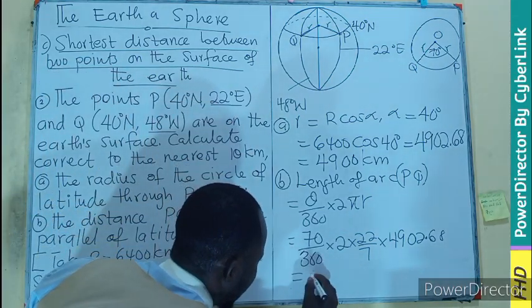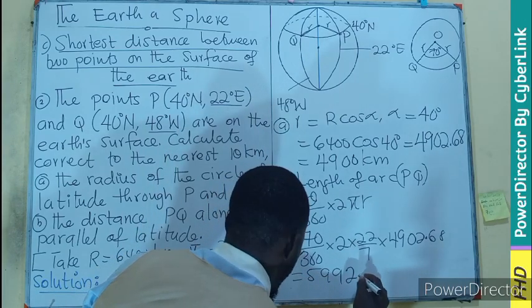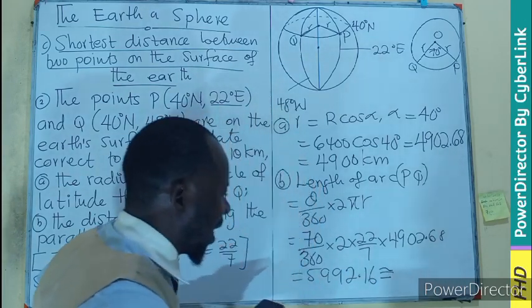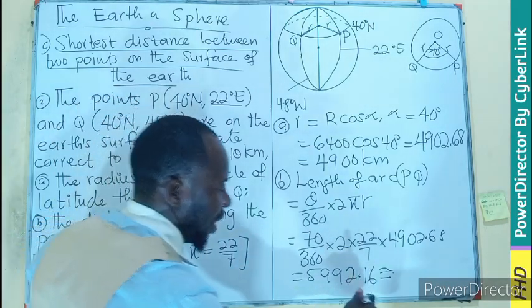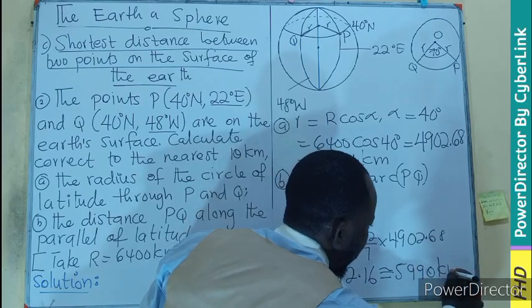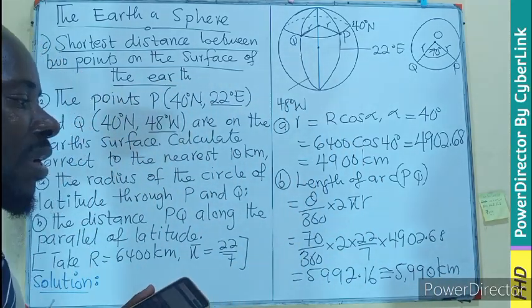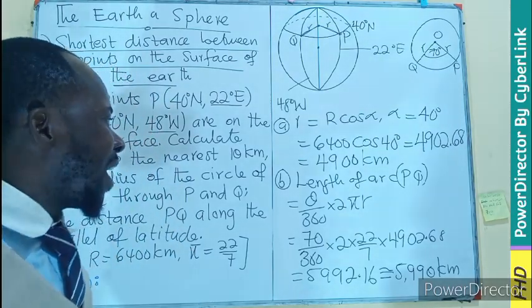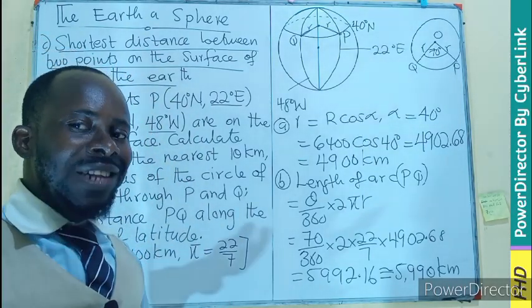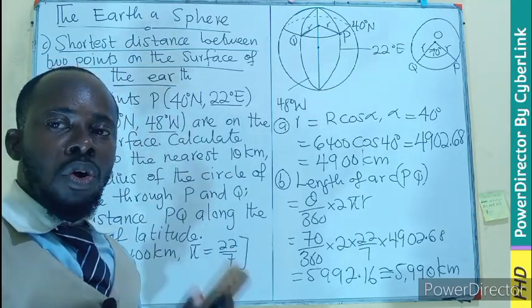So this is going to give us 5,992.16. We are approximating that into nearest 10,000. So we take away this as 5,990 kilometers. So that is the distance between the two points PQ, the shortest distance between the point along the latitude.